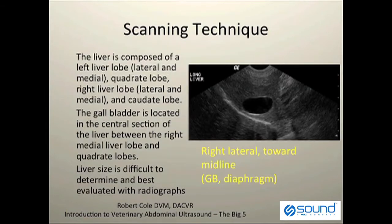The liver is composed of multiple lobes: the left liver lobe, which is split into lateral and medial portions; a quadrate lobe; a right liver lobe, which is also split into lateral and medial components; and a caudate lobe. The gallbladder is located in the central sections of the liver, typically between the right medial liver lobe and quadrate lobes.